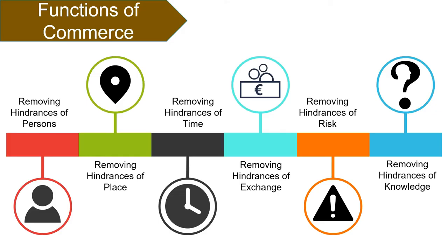Removing the hindrance of knowledge: consumers often do not have sufficient knowledge and awareness about the benefits and uses of products manufactured by producers, which means producers face difficulty in selling them. Advertising and sales promotion helps in removing this hindrance. Advertising often persuades people to buy goods and services. So these are the functions performed by commerce.